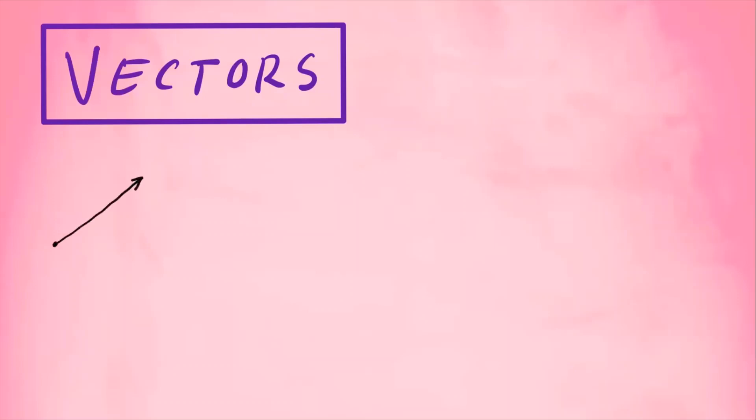Welcome everyone. In this video we're going to focus on vectors and how to perform operations with vectors. Here is a vector that has an initial point and an arrow at the head. This is what we call the initial point of the vector, and this is the head of the vector. You can denote this using a symbol such as v with an arrow right on top, which denotes a vector.